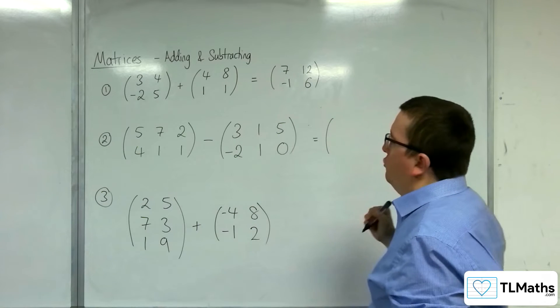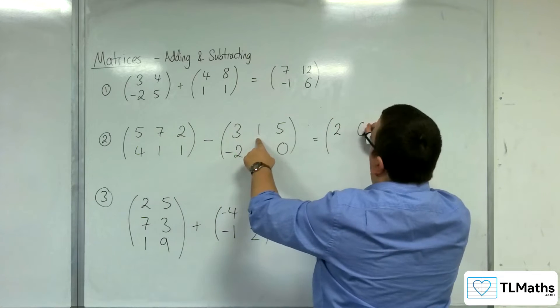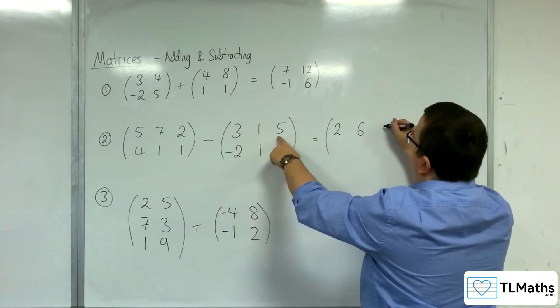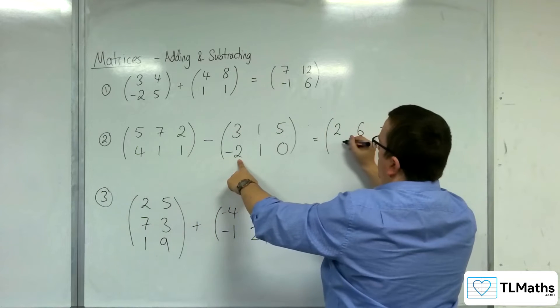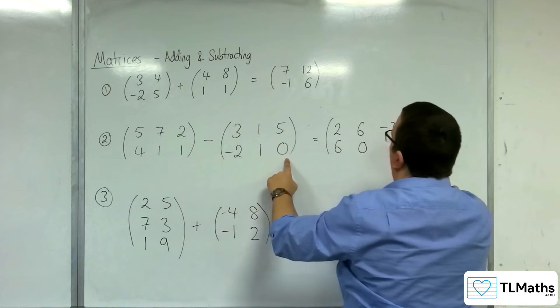Likewise, with subtraction, 5 take away 3 is 2, 7 take away 1 is 6, 2 take away 5 is minus 3, 4 take away minus 2 is 6, 1 take away 1 is 0, 1 take away 0 is 1.